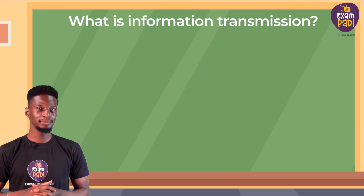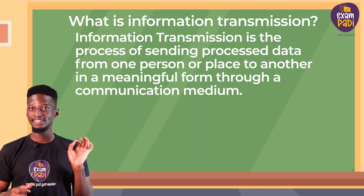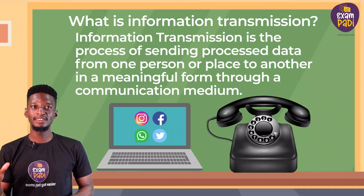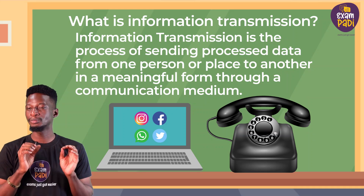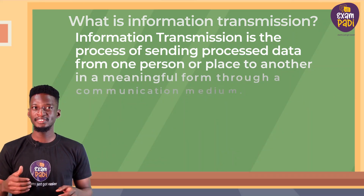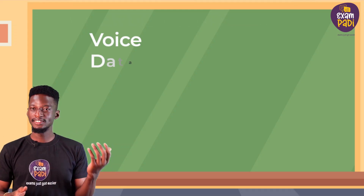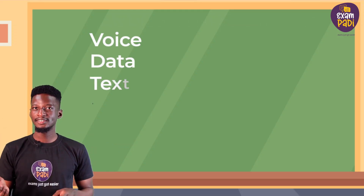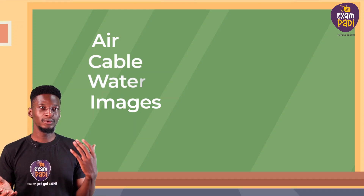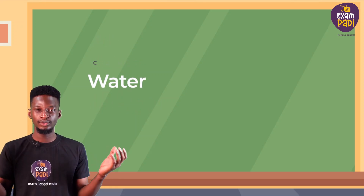What is information transmission? Information transmission is the process of sending data from one person or place to another in a meaningful form through a communication medium. It is the exchanging of information in any form — that is voice, data, text, and images — over a medium like air, cable, or water, using natural or artificial equipment or tools.